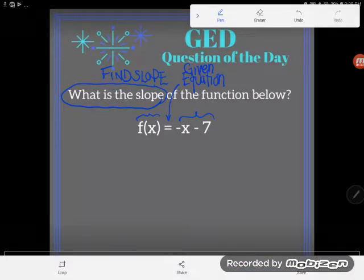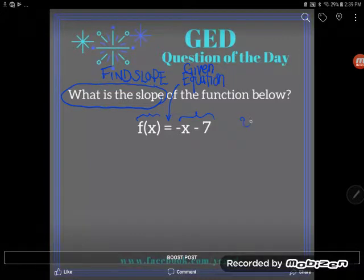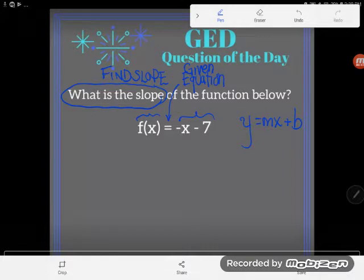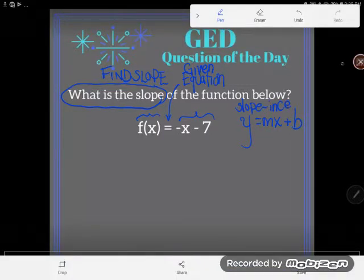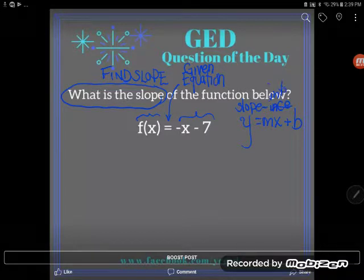If you remember, the GED formula sheet has this formula on it. It says that the slope intercept form of a line is y = mx + b. Mathematicians love this form. We call it the slope intercept form because we're not super creative. That is straight off the GED formula sheet.